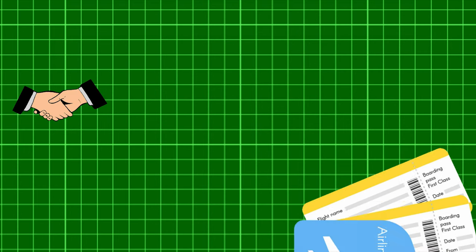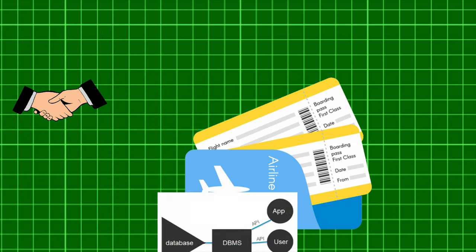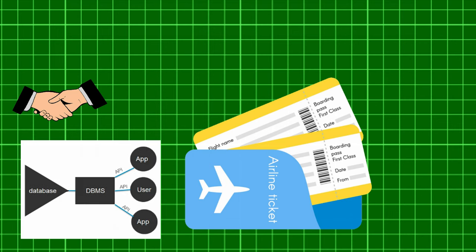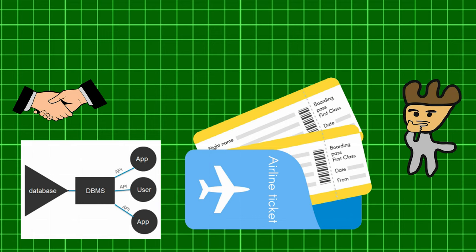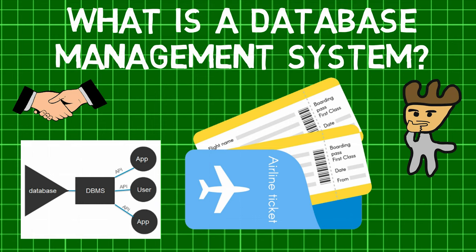Welcome back MechanicalEI. Did you know that the reservation information along with flight schedule stored in an airline's database can easily be retrieved using a database management system? This makes us wonder: what is a database management system?